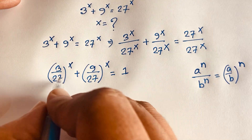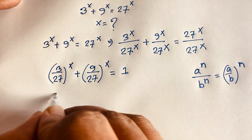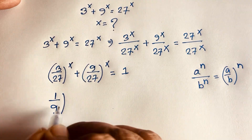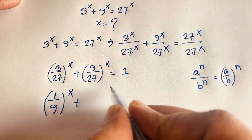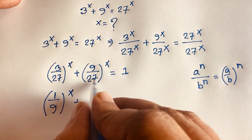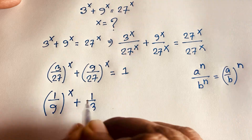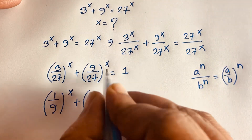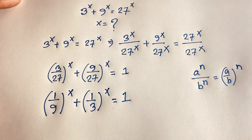Evaluating the fractions: 3 divided by 27 is 1/9, and 9 divided by 27 is 1/3. So we have (1/9) to the power x plus (1/3) to the power x is equal to 1.